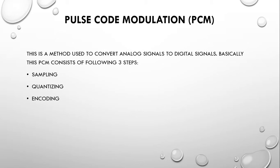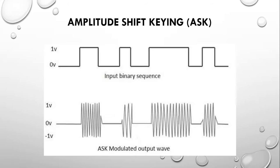Amplitude shift keying (ASK) varies the amplitude of the carrier signal to create signal elements, while both frequency and phase remain constant. The amplitude changes to represent different data values.